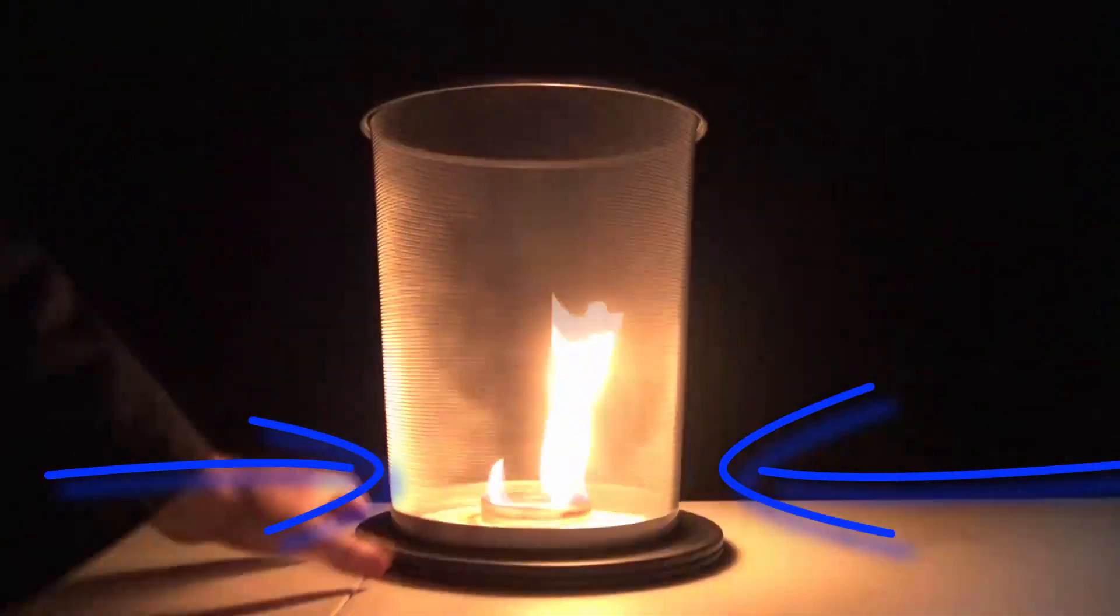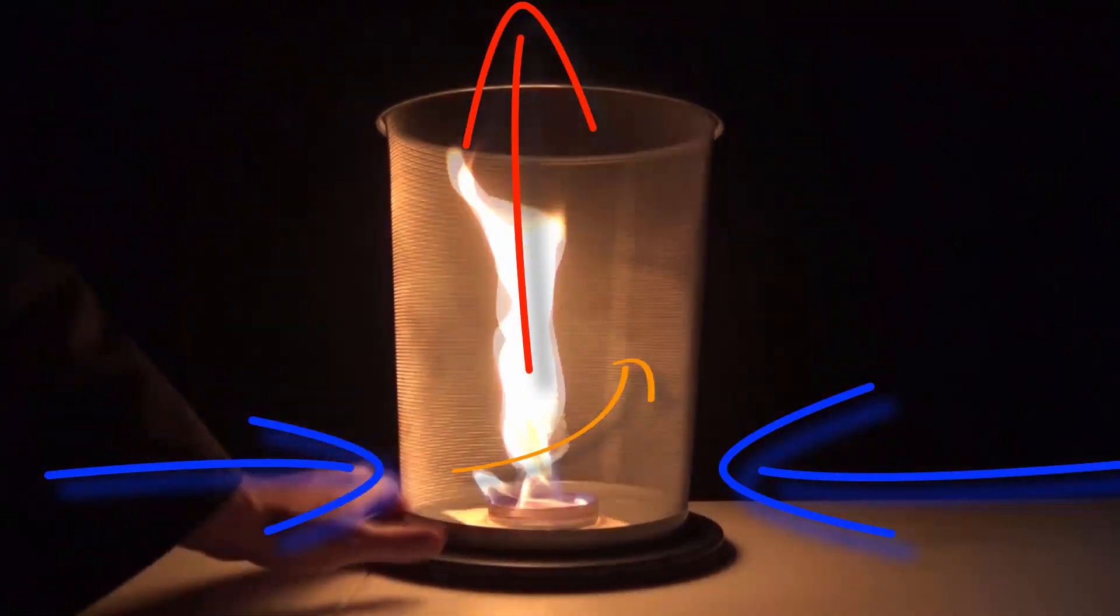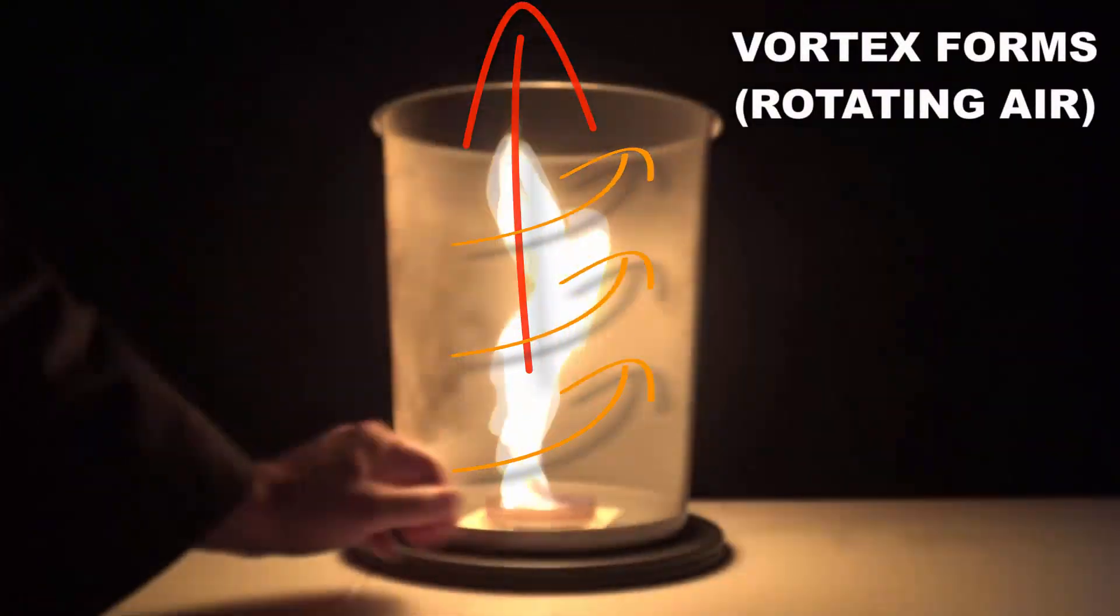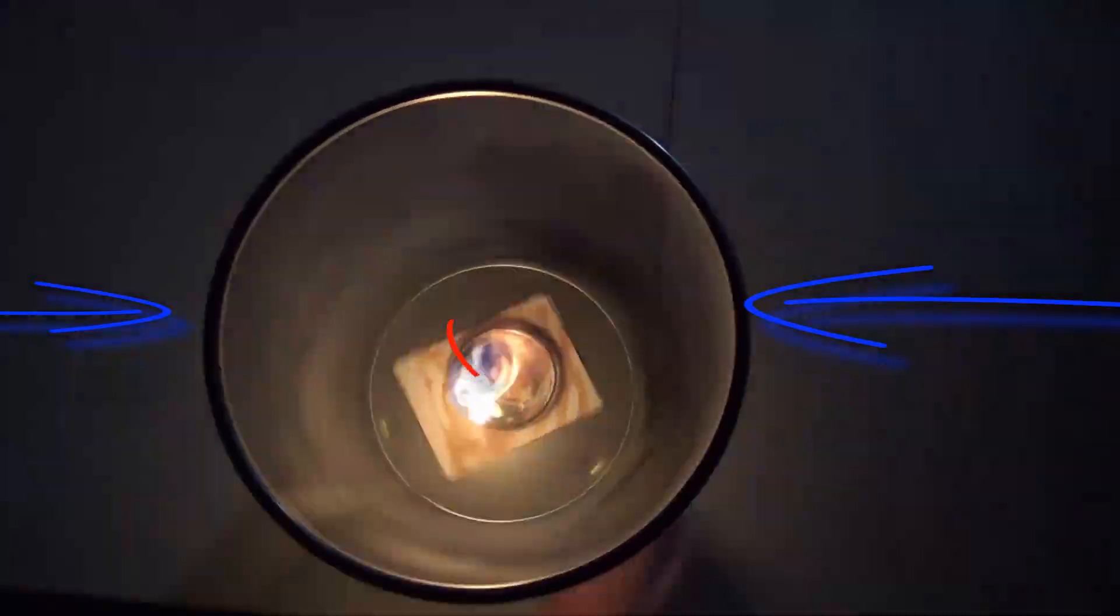But that's what the wire mesh does. It causes these vortices to form inside, and that causes our tornado to form. So the hot air is still rising up but the cool air is coming in.